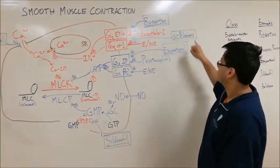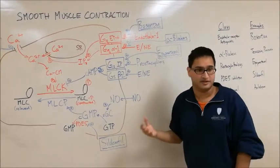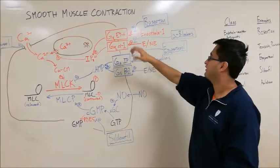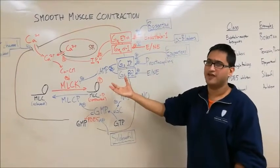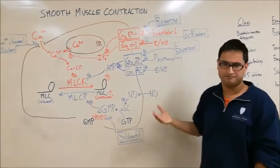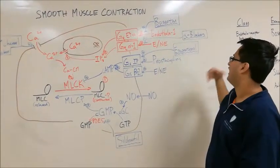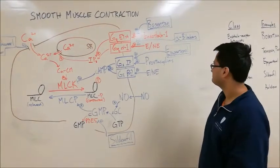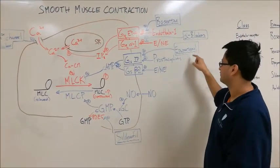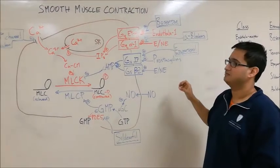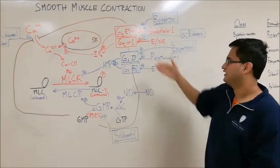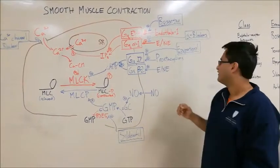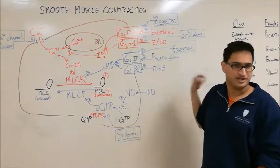Alpha blockers, including molecules like prazosin and terazosin, block the alpha-1 receptor, preventing epinephrine and norepinephrine from promoting vasoconstriction and therefore promoting vasodilation. Alpha blockers tend to be used in the control of hypertension. Epoprostenol is a prostacyclin analog — it binds the receptor and promotes vasodilation by inhibiting MLCK, and like bosentan, it is also used for pulmonary hypertension.